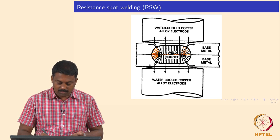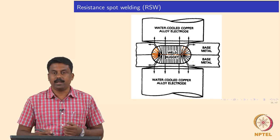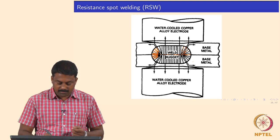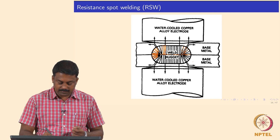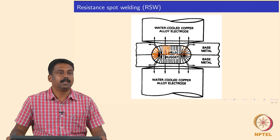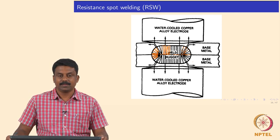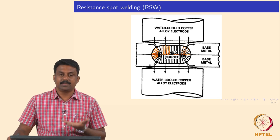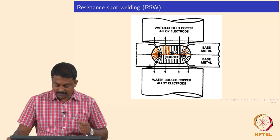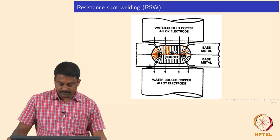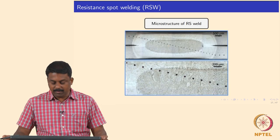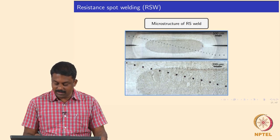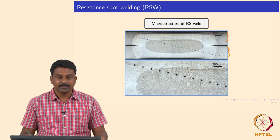You always have columnar growth growing from the fusion boundary towards the weld centre line, because that is how you extract the heat. You will have a very steep temperature gradient and then the weld solidifies from the fusion boundary towards the weld centre line. Apart from that, you also apply a load, which will also influence the stresses developing during solidification. Both will influence cracking in some alloys.